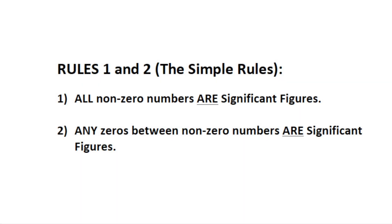The first two rules are actually simple. All non-zero numbers are considered significant figures. Non-zero numbers include 1, 2, 3, 4, 5, 6, 7, 8, and 9. The second rule: any zeros between two non-zero numbers are also considered significant figures. These are the two rules that you must always consider when determining how many significant figures should be in your answer.